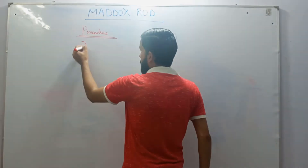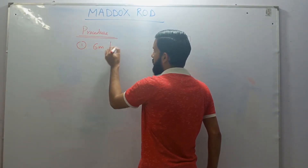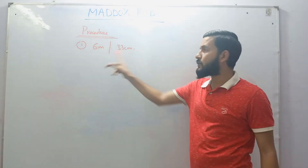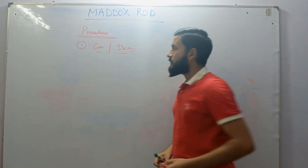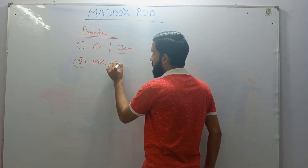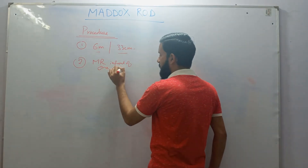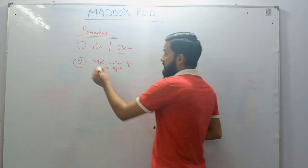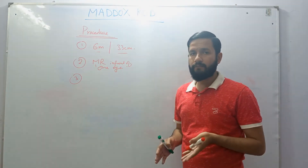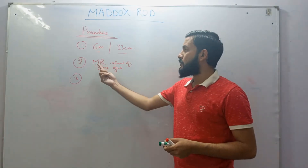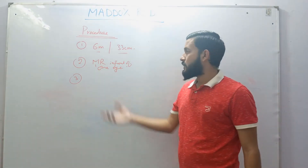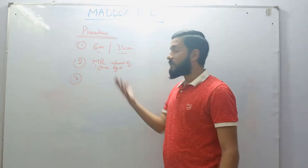The next is the procedure for doing the Maddox rod test. It can be performed at 6 meters for distance or at 33 cm for near, depending upon whether the examiner wants to measure at distance or near. In both cases the target is a light source. You then place the Maddox rod in front of one eye, and the placement of the Maddox rod will depend upon which type of deviation you want to measure.